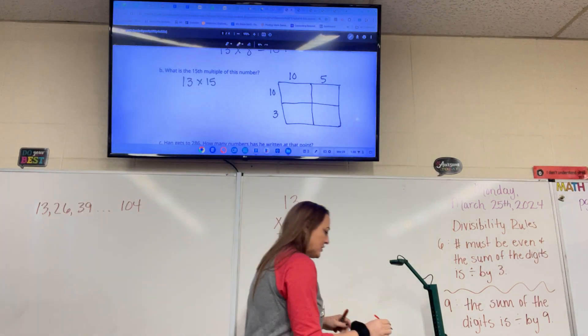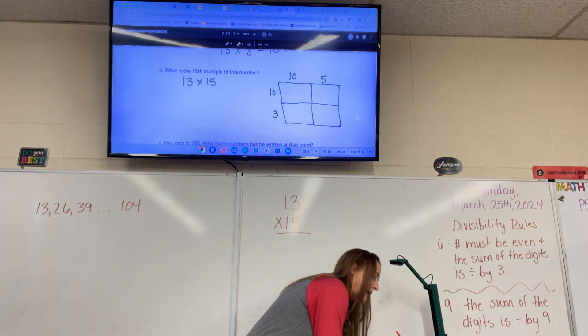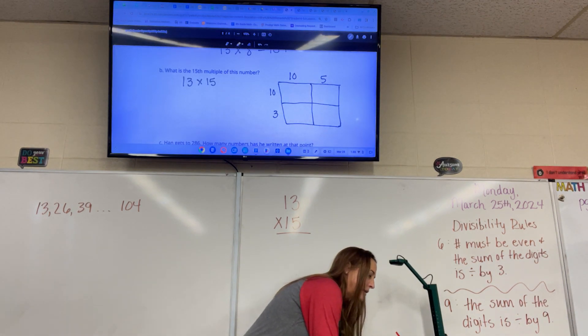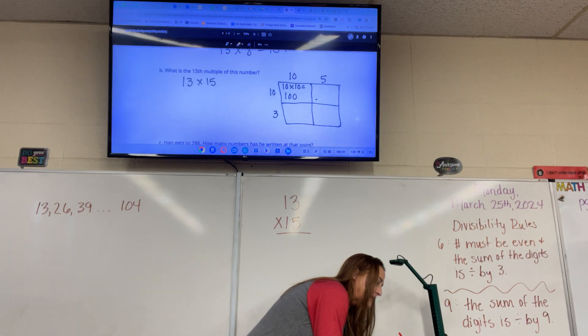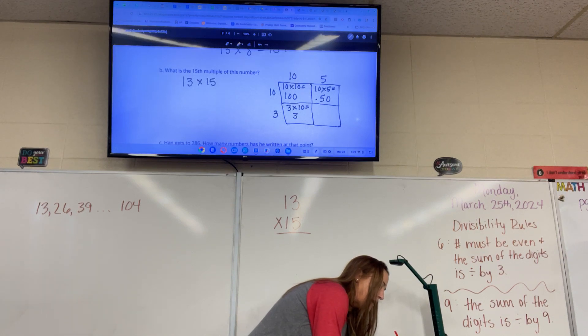So the first box, we're going to multiply what? 10 times 10 what does that equal? 100. And the second box what are we going to multiply? 10 times 5. 10 times 5 which equals? 50. Good. What about the next box? 3 times 10. Which equals? 30. And the last box? 3 times 5. Which equals? 15. Okay.